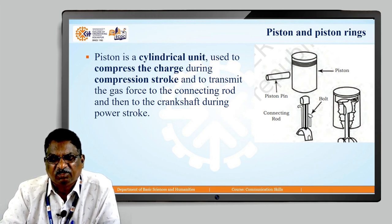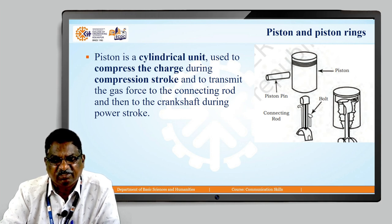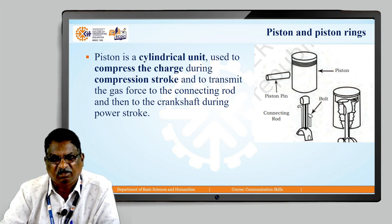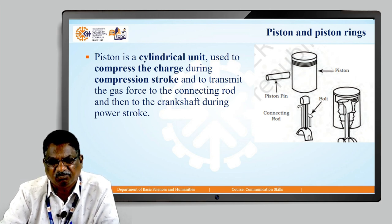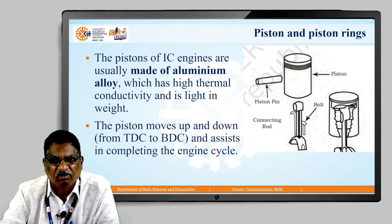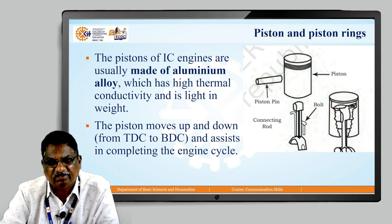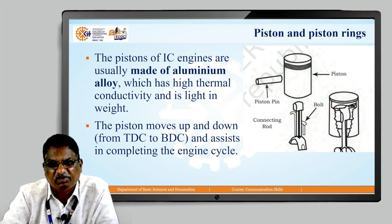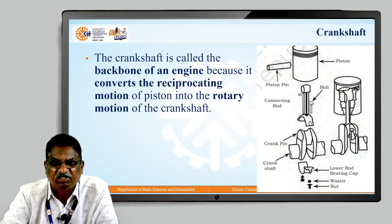Piston and piston rings: as shown in the diagram, there is a piston with piston rings at the top. The piston is a cylindrical unit used to compress the charge during the compression stroke and to transmit gas force to the connecting rod and then to the crankshaft during the power stroke. Pistons of IC engines are usually made of aluminium alloy, which has high thermal conductivity and is light in weight. The piston moves up and down from TDC to BDC to complete the engine cycle.